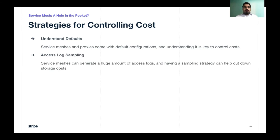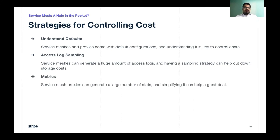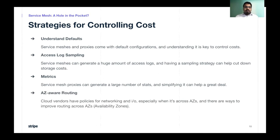The next strategy is to sample access logs. Depending on the amount of traffic flowing through a system, your service mesh can generate a large number of access logs, which can quickly increase storage costs, and having a good sampling strategy can help cut those down. Similar to that is metrics — because service mesh proxies can generate a large number of stats, it can quickly overwhelm your metrics systems. Finally, perform AZ-aware routing. Cloud vendors have policies for networking and I/O, and when your requests cross availability zone borders it's going to cost you, so it becomes important to identify services routing across AZs and find ways to minimize that cross-AZ traffic.